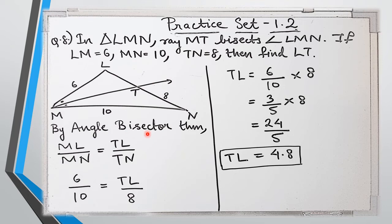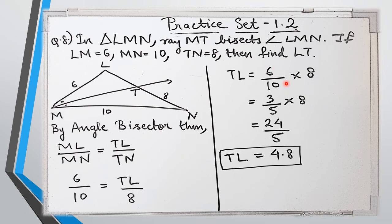By the angle bisector theorem, the bisector divides the opposite side in the same ratio as the other two sides. So ML upon MN equals TL upon TN. Substituting the values: 6 upon 10 equals TL upon 8. Multiplying 8 to the other side: TL equals 6 by 10 into 8. Since 6 by 10 simplifies to 3 by 5, we get 3 by 5 into 8, which is 24 upon 5. So TL equals 4.8.